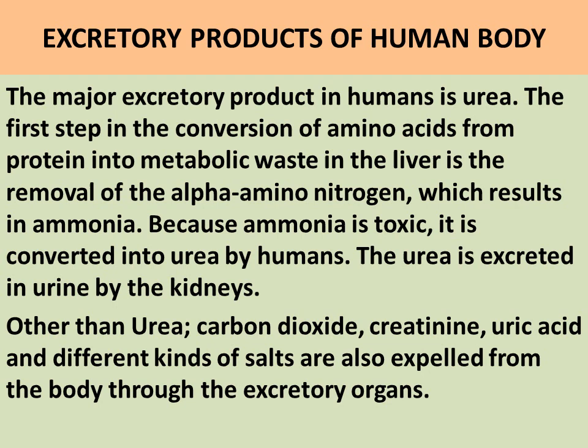The major excretory product in humans is urea. The first step in the conversion of amino acids from protein into metabolic waste in the liver is the removal of the alpha amino nitrogen, which results in ammonia. Because ammonia is toxic, it is converted into urea by humans. The urea is excreted in urine by the kidneys. Other than urea, carbon dioxide, creatinine, uric acid, and different kinds of salts are also expelled from the body through the excretory organs.